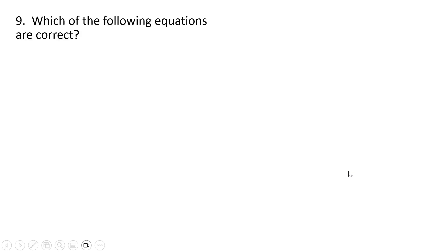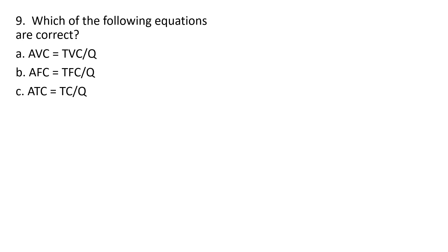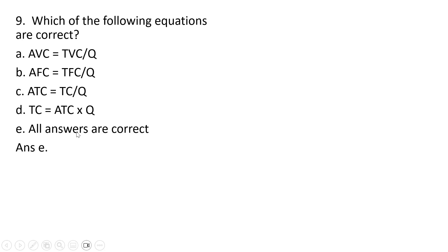Question nine. Which of the following equations are correct? Answer choices A, B, C, and D are all correct. Answer choice D can be derived from answer choice C by multiplying everything through by Q. So all answers are correct. Answer choice C.